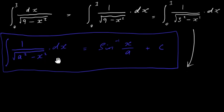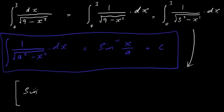There are a number of other similar rules, and you can find these integrals in the mathematical tables or the log tables — I won't go through them all, this is just one example. So we apply the rule and write down sine inverse of x over a, where our a is 3, evaluating between 0 and 3.